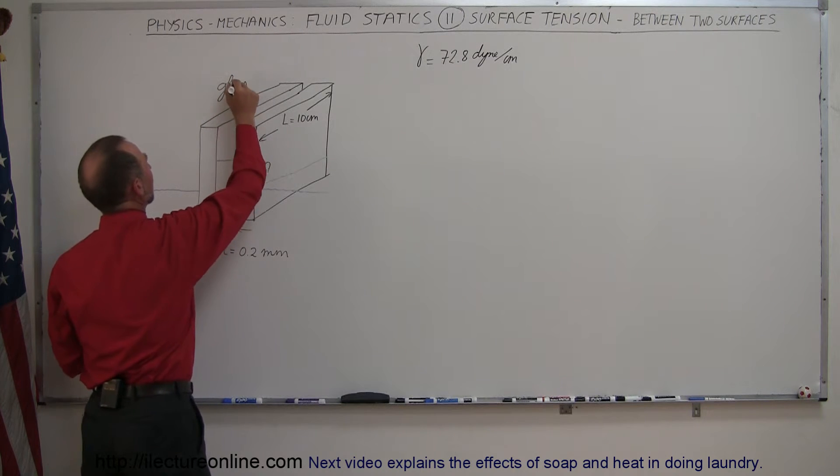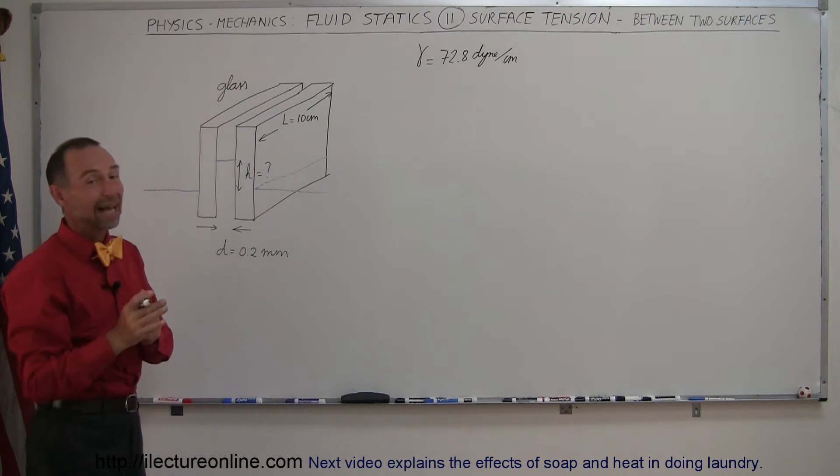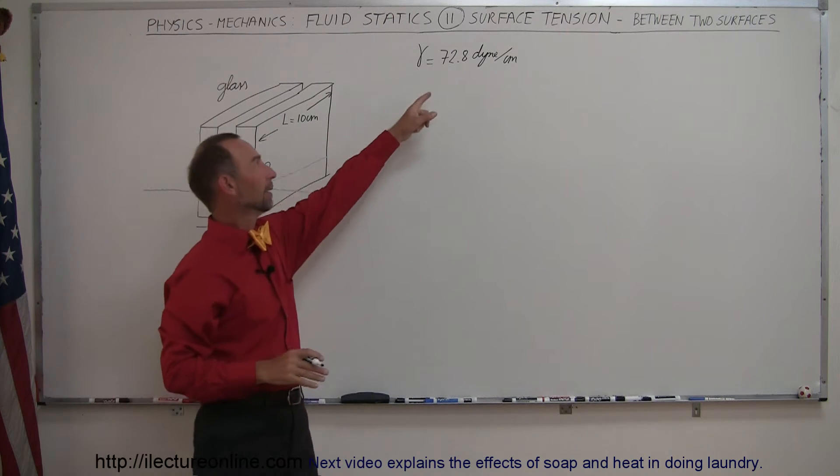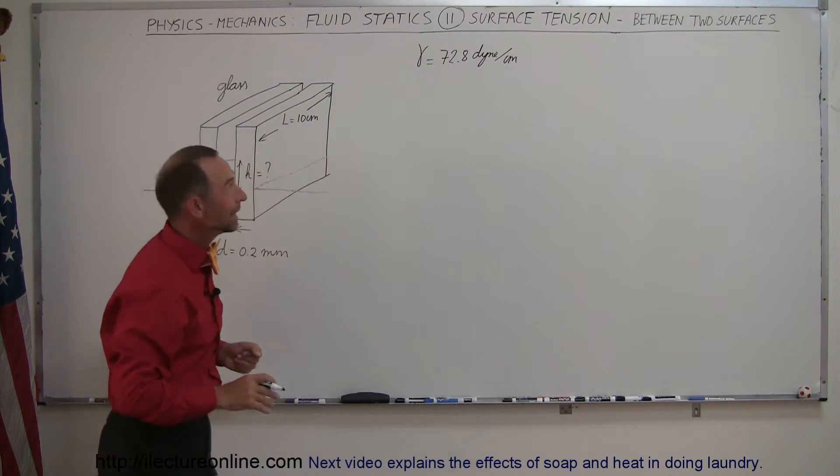That makes it easier because that way we know that the surface tension between the glass and the water that's in between and on either side of it—the coefficient is 72.8 dynes per centimeter.